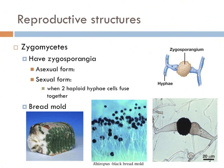Zygomycetes are another group of fungi, and they differ principally by their reproductive structures. In fact, all fungi principally differ by their reproductive structures. These reproductive structures are called zygosporangia, which hold their spores. They are mostly terrestrial in habitat, living in soil or on decaying plant or animal material. The most common example of a zygomycete is bread mold. Its mycelium sends hyphae into the bread to absorb nutrients. In its asexual phase, it develops a bulbous black sporangia on the tips of upright hyphae, and each of the sporangia contains hundreds of spores.